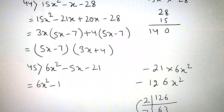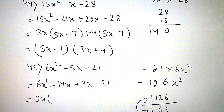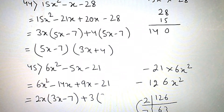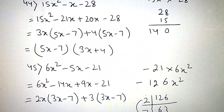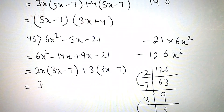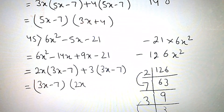So we write: 6x square minus 14x plus 9x minus 21. Take 2x common, so write 3x minus 7. Take plus 3 common, so 3x minus 7 appears again. Then 3x minus 7 is common — take it common — 2x plus 3 remains. So the answer is (3x minus 7)(2x plus 3).